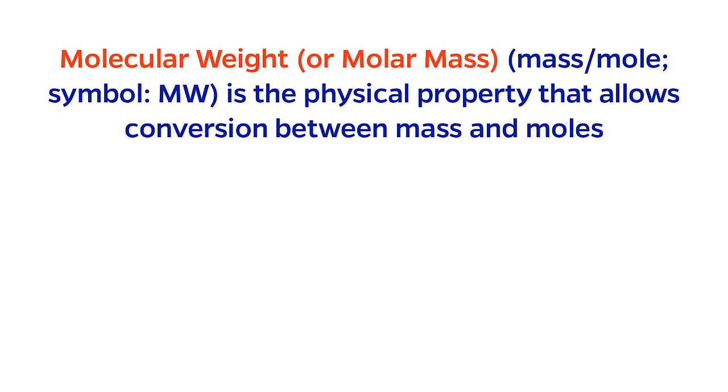If we want to convert to moles, the property that allows this conversion is the molar mass, or molecular weight, defined as the mass per mole. Again, the calculation comes about by considering the units. If we start with mass and want to get to moles, we must divide by the molecular weight so that the mass unit cancels.